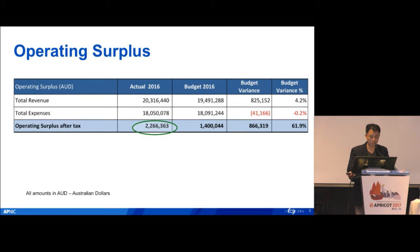Operating surplus for 2016: our budget was 1.4 million dollars, but we actually gathered 2.2 million dollars. The budget variation is almost close to 61.9%, because the major revenue came from increased membership numbers.